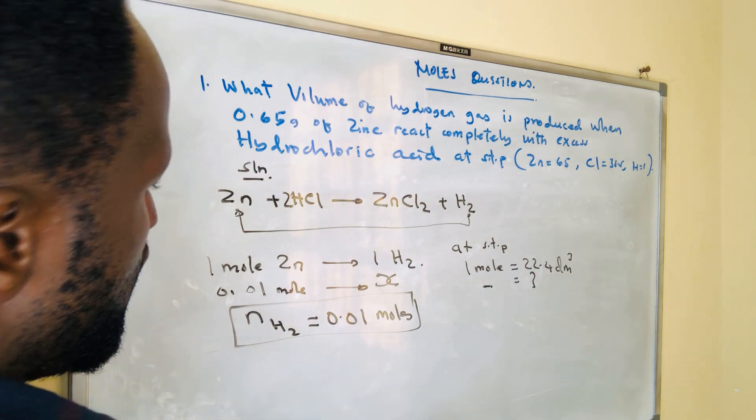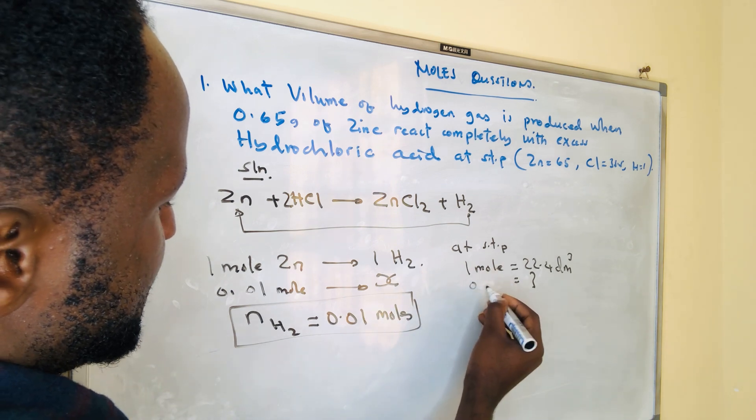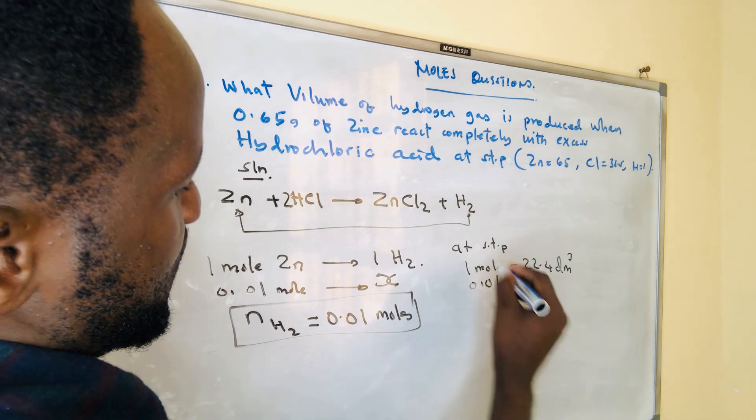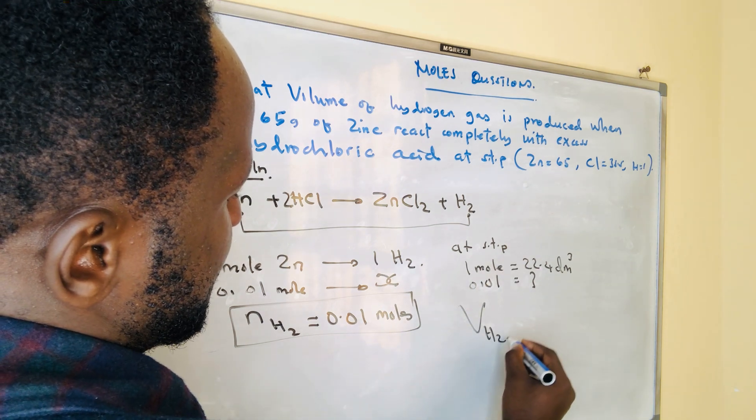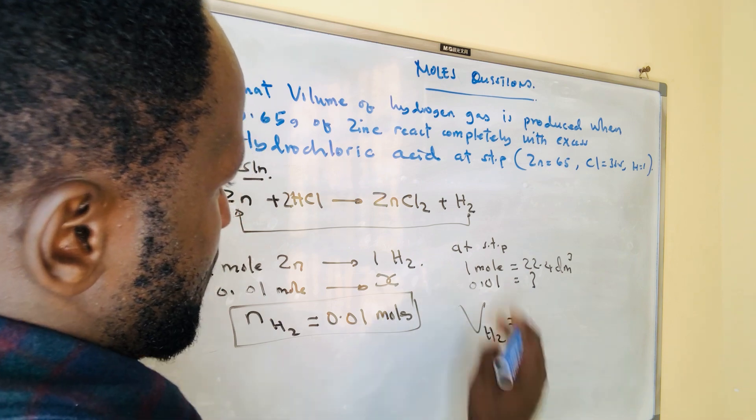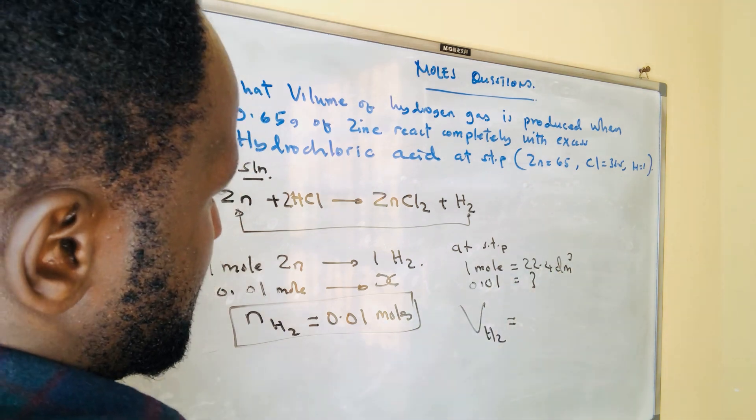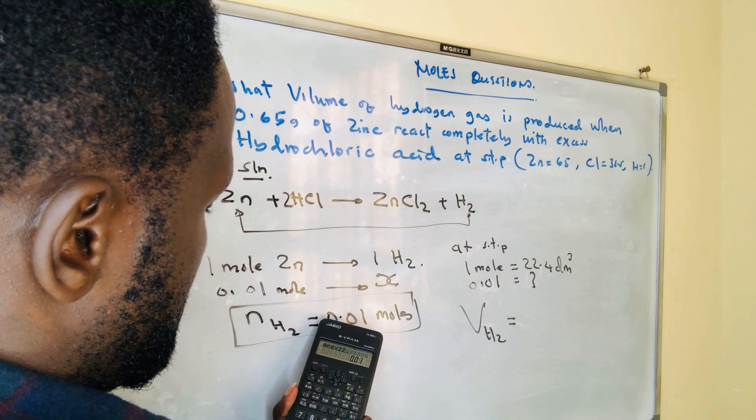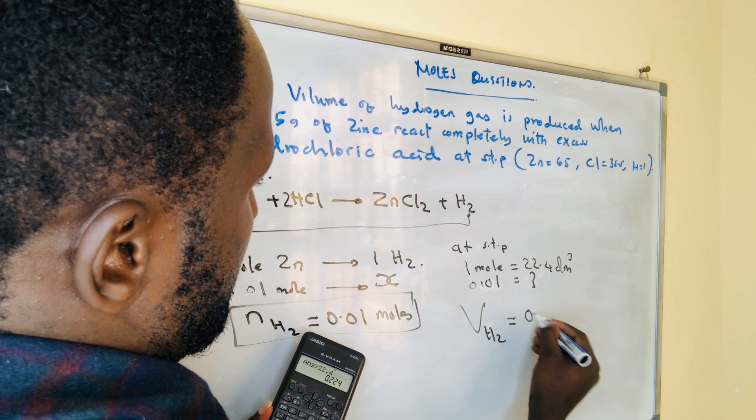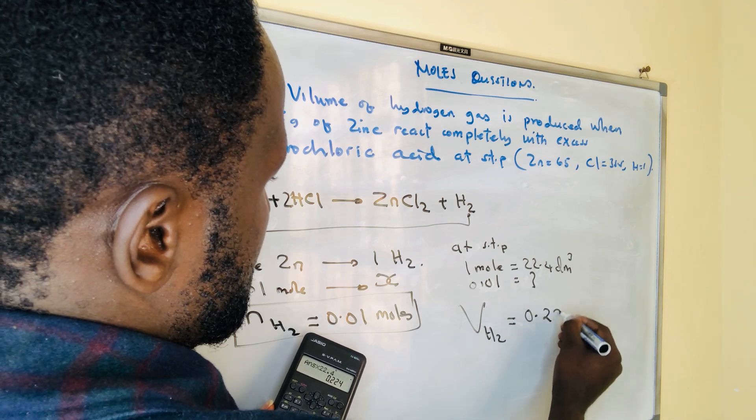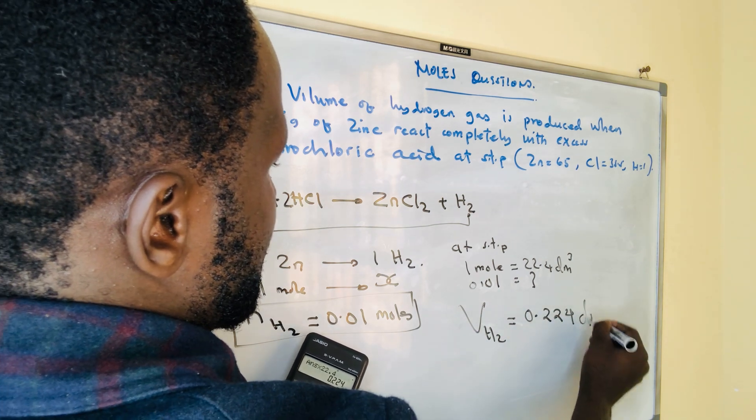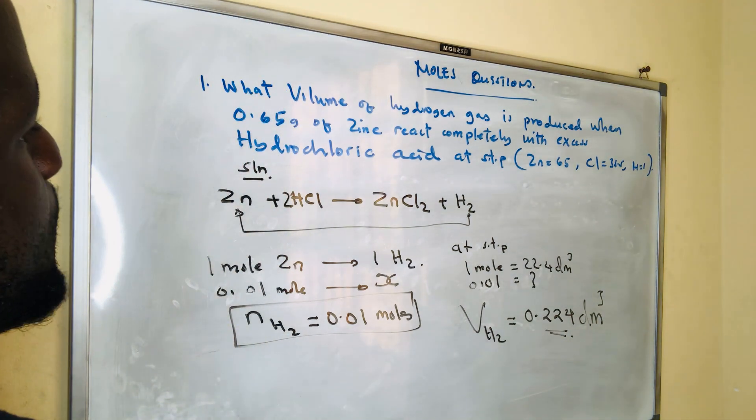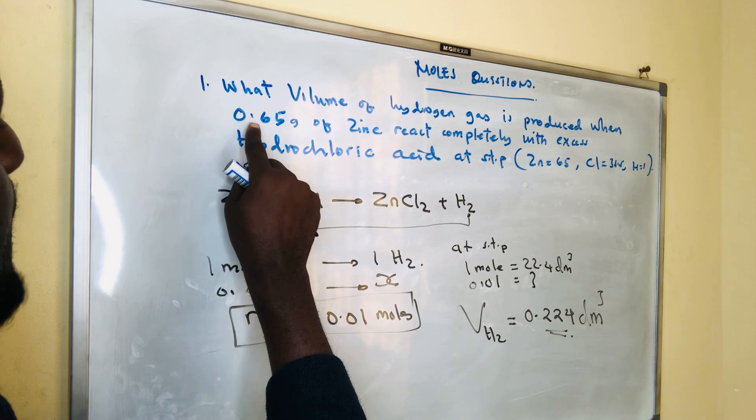What if you have 0.01 moles of hydrogen, what volume will it give? To find the volume of hydrogen gas, take this value: 0.01 times 22.4, and you get 0.224 DM³. So that's the volume of hydrogen gas that will be produced.